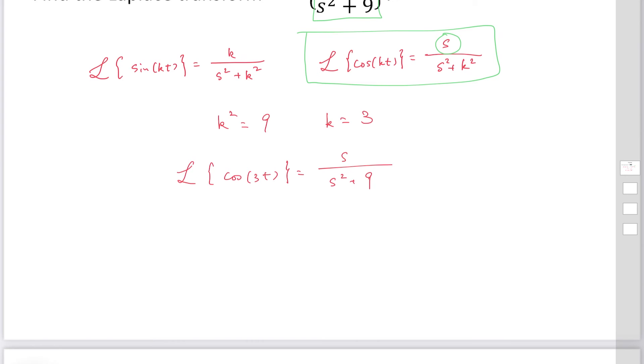So from this equation, the inverse Laplace transform of S over S squared plus 9 is equal to cosine 3t.